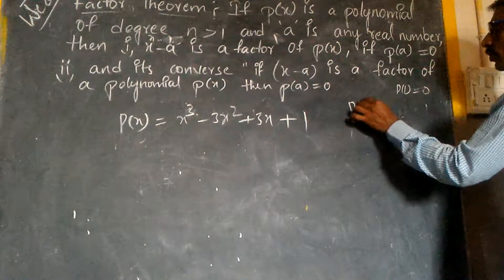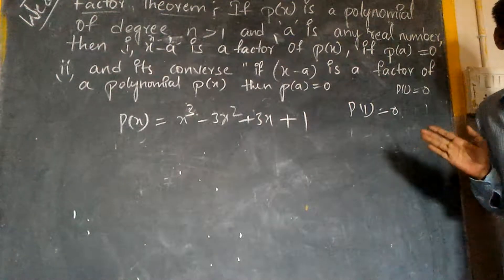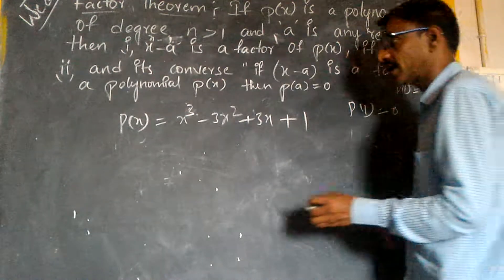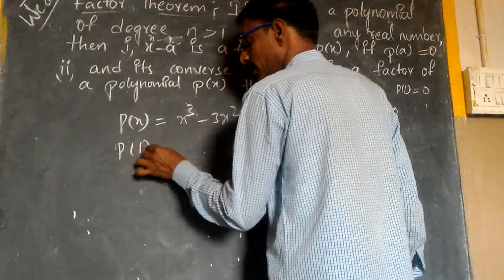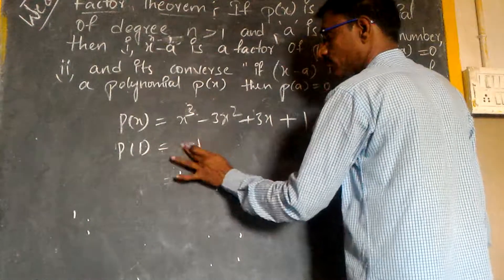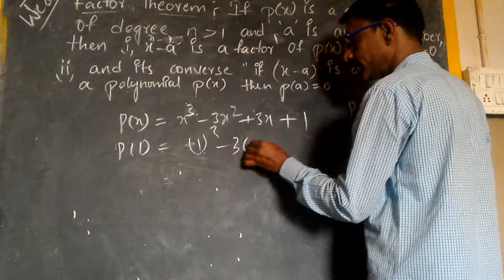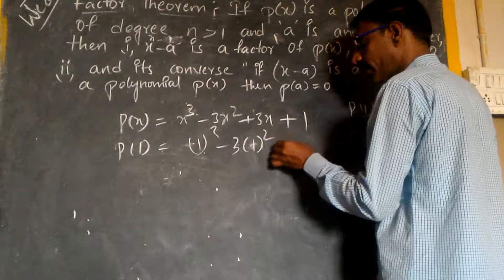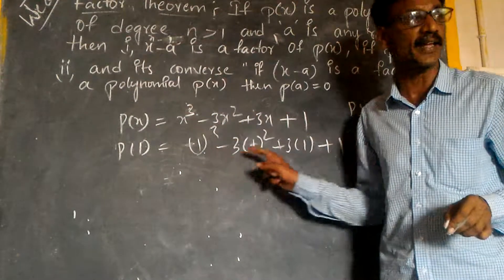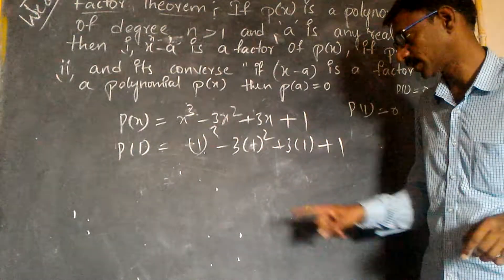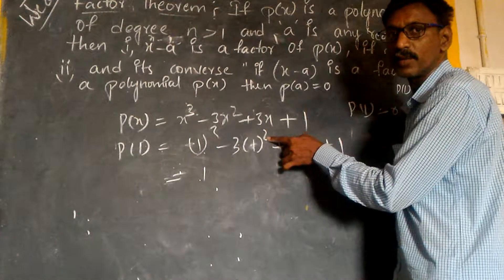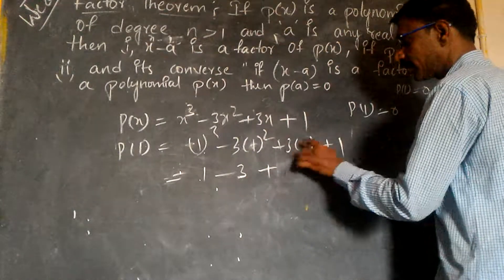Then p of 1 must be equal to 0. By trial and error I am taking x equal to 1. So: 1 cube minus 3 into 1 square plus 3 into 1 plus 1. In place of x I am taking 1. 1 cube is 1, 1 square is 1, so 3 times 1 is 3.